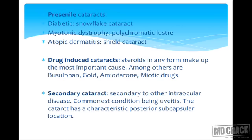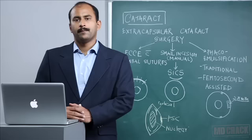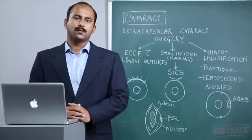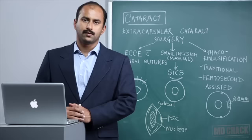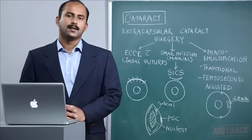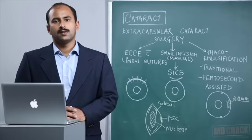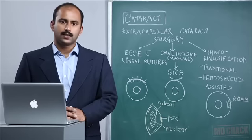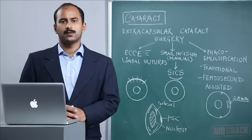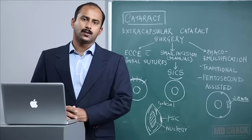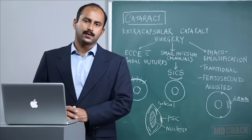The most common cataracts we see in practice are senile cataracts, which develop after a certain age and are a by-product of protein denaturation over time. Cataracts that come on before the age of 40 years are called pre-senile cataracts. These have different etiologies like cataract in diabetes, cataract of myotonic dystrophy, syndromic associations, and cataracts with atopic dermatitis which form the typical shield cataracts.